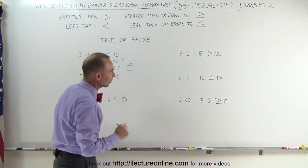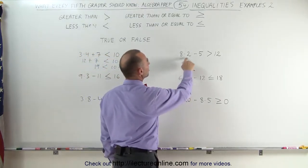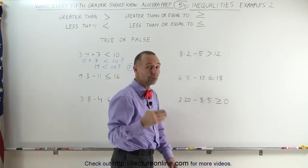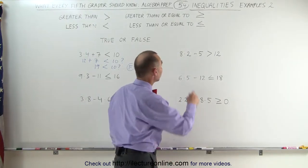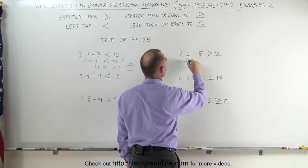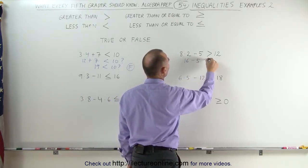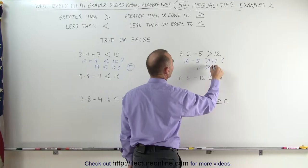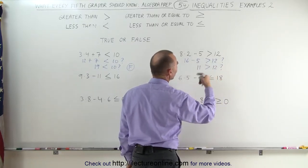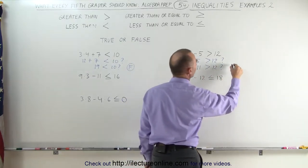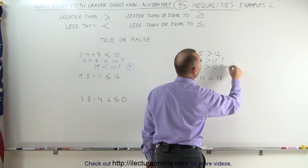Let's go over here and try this one. 8 times 2 minus 5 — is that greater than 12? First we do the multiplication: 8 times 2, that is 16, minus 5 — is that greater than 12? Well, 16 minus 5, that's equal to 11. Is 11 greater than 12? The answer is no — 11 is less than 12. So this is a false statement.